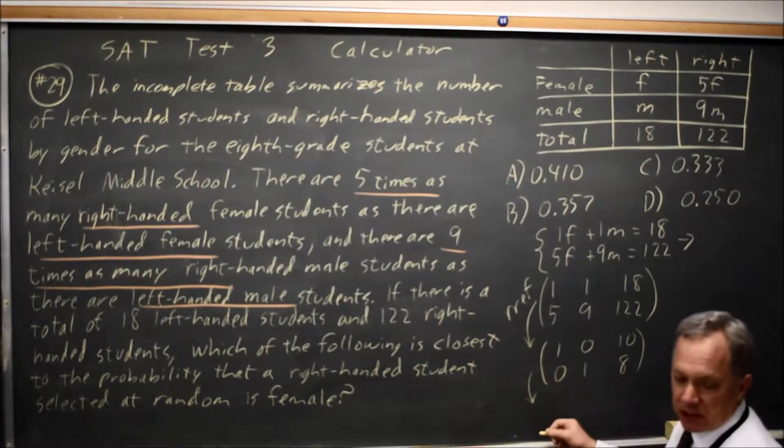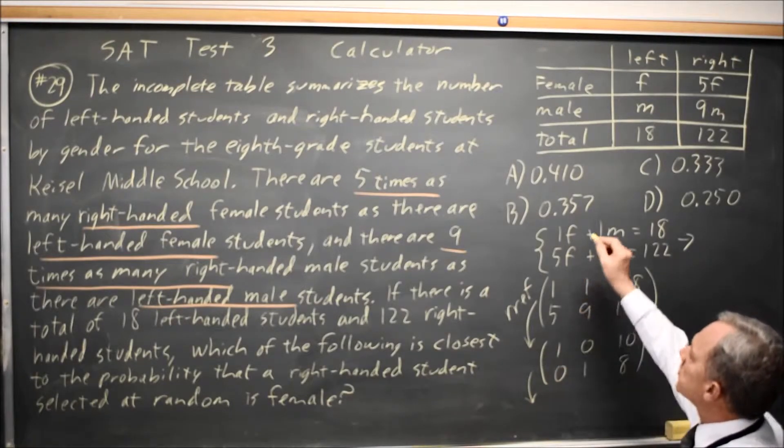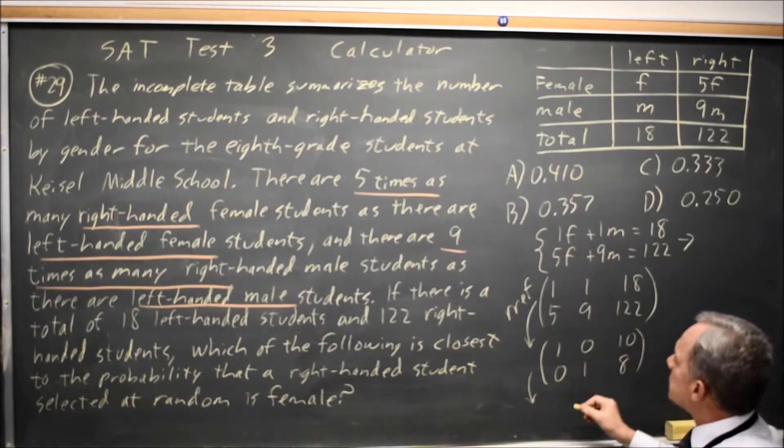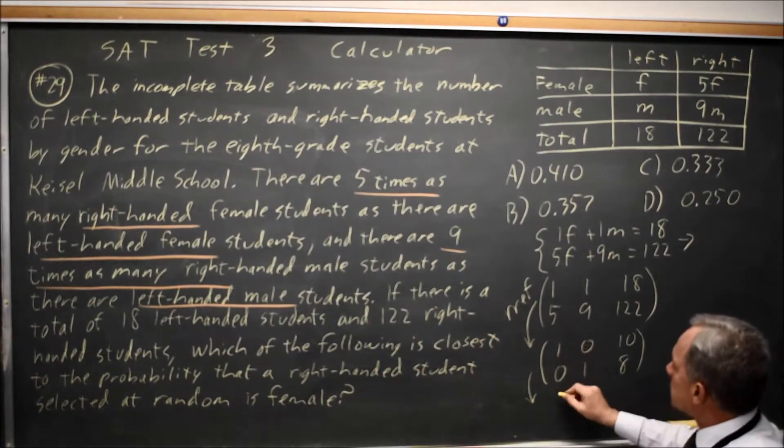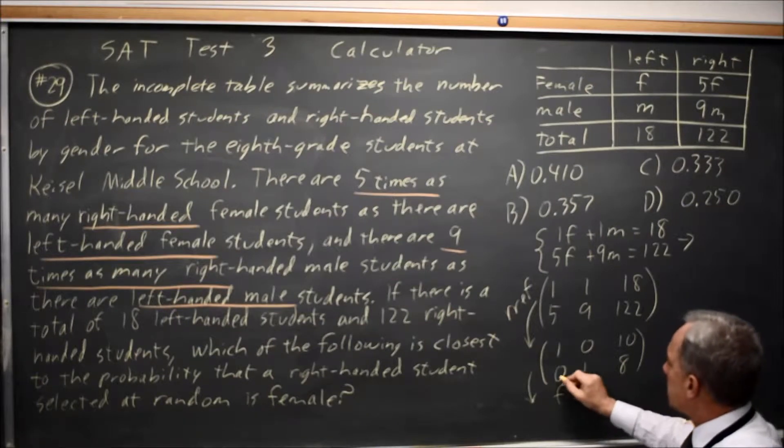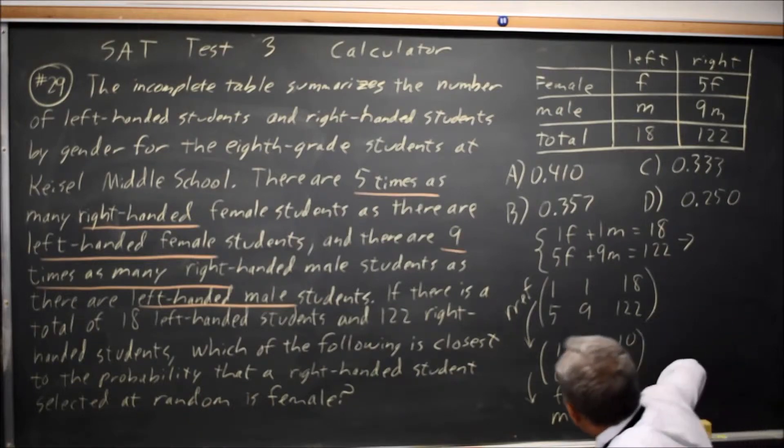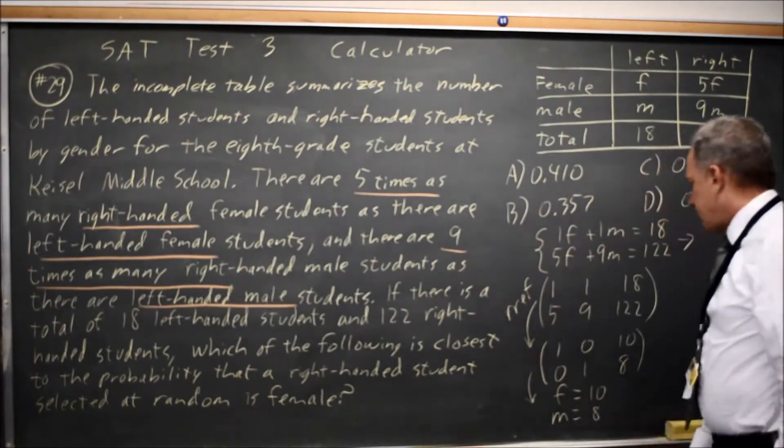If I rewrite this in the form of a system of equations, this is 1 times F plus 0 times M equals 10, and 0 times F plus 1 times M equals 8. This gives me the numbers for both F and M.